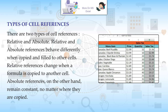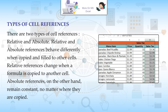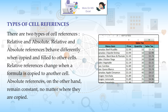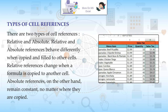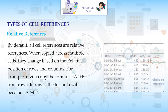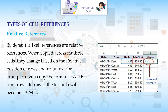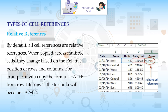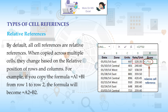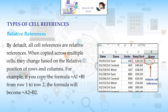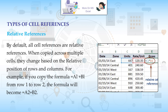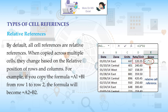Relative references change when a formula is copied to another cell. Absolute references, on the other hand, remain constant no matter where they are copied. By default, all cell references are relative references. When copied across multiple cells, they change based on the relative position of rows and columns. For example, if you copy the formula =A1+B1 from row 1 to row 2, the formula will become =A2+B2.